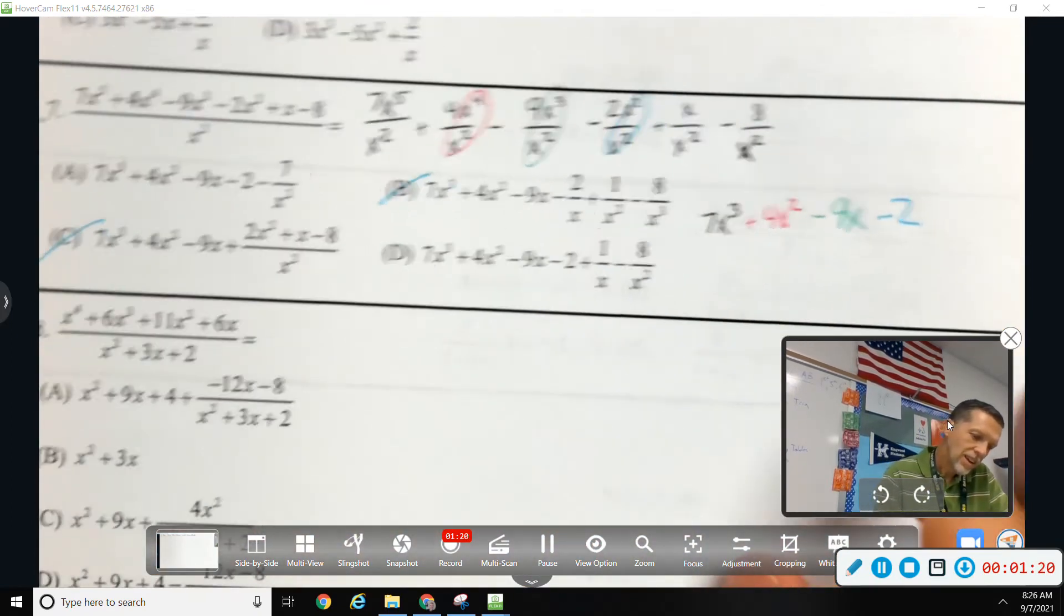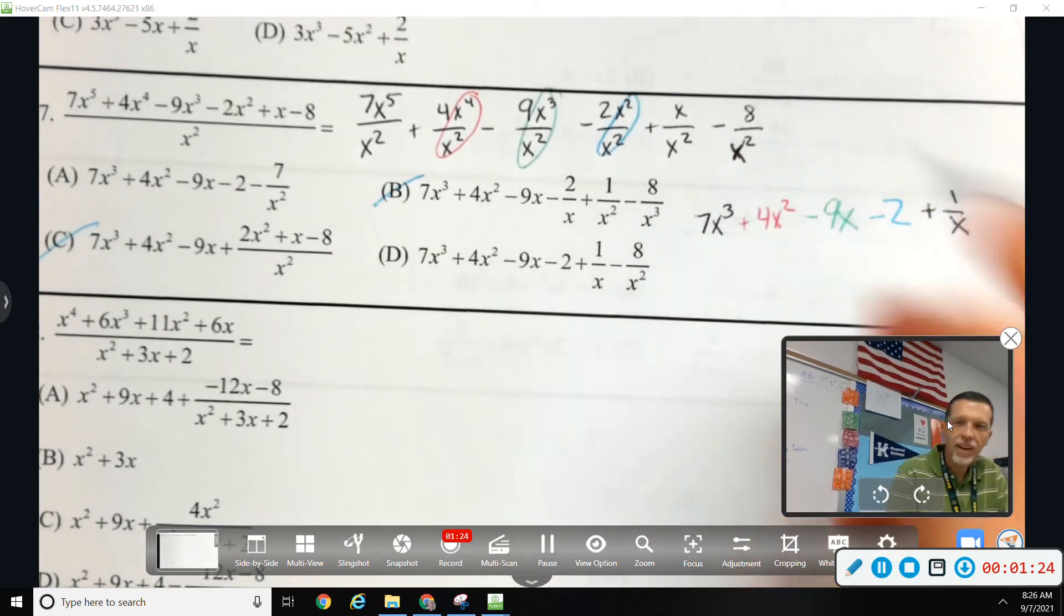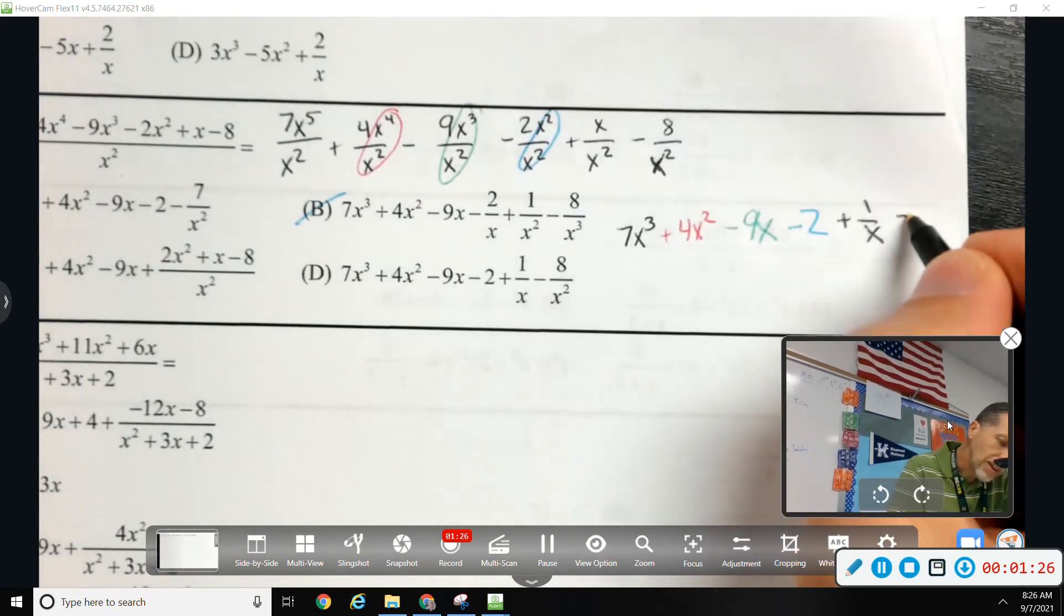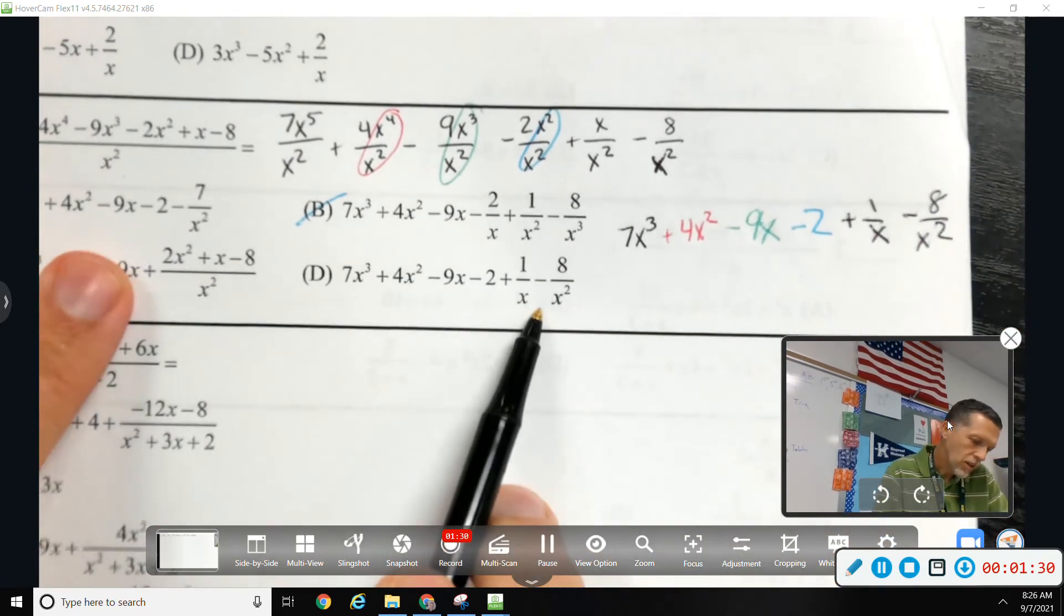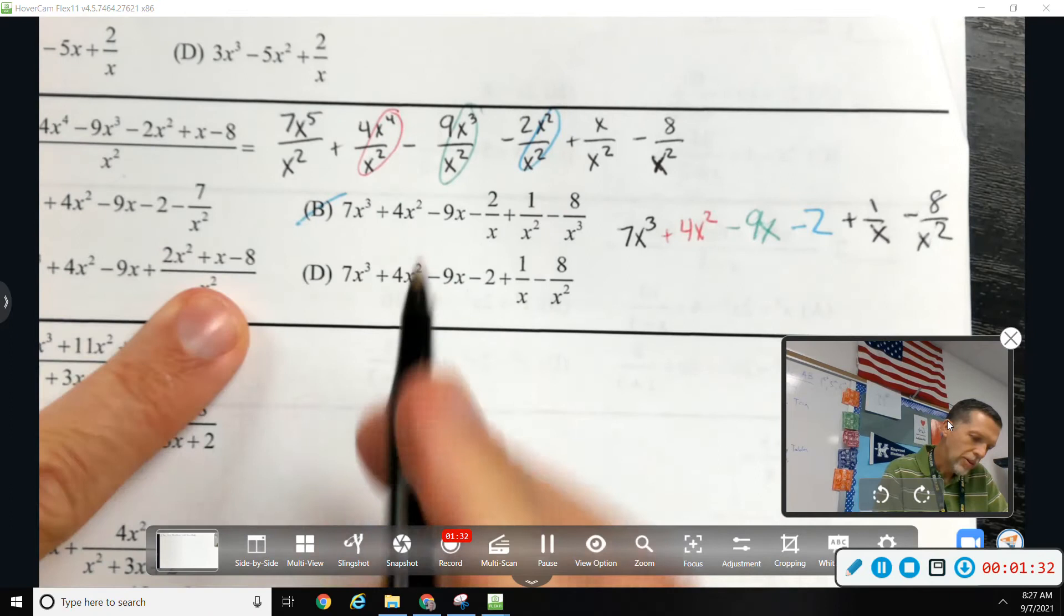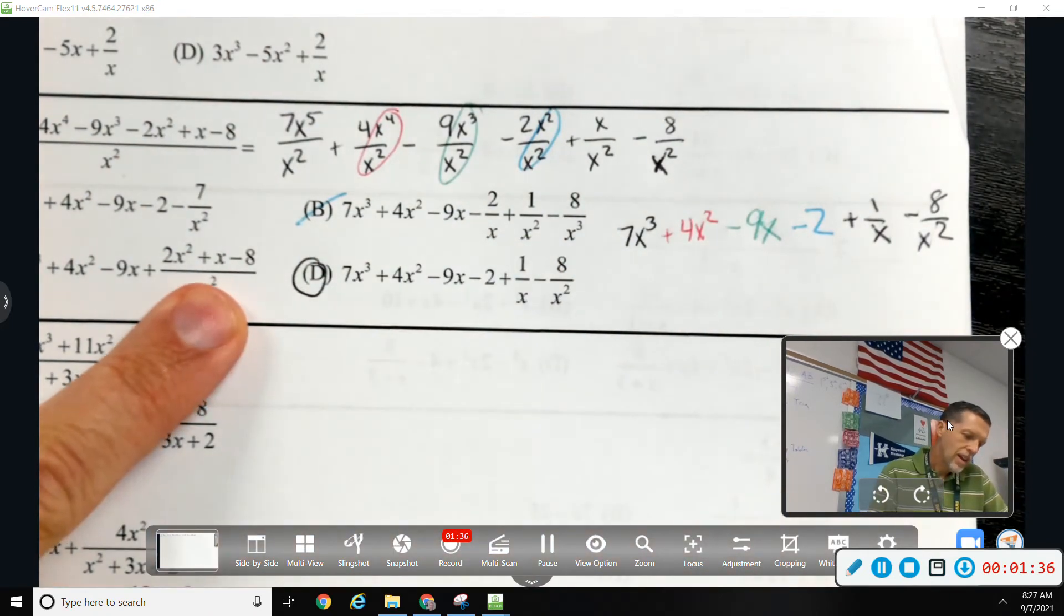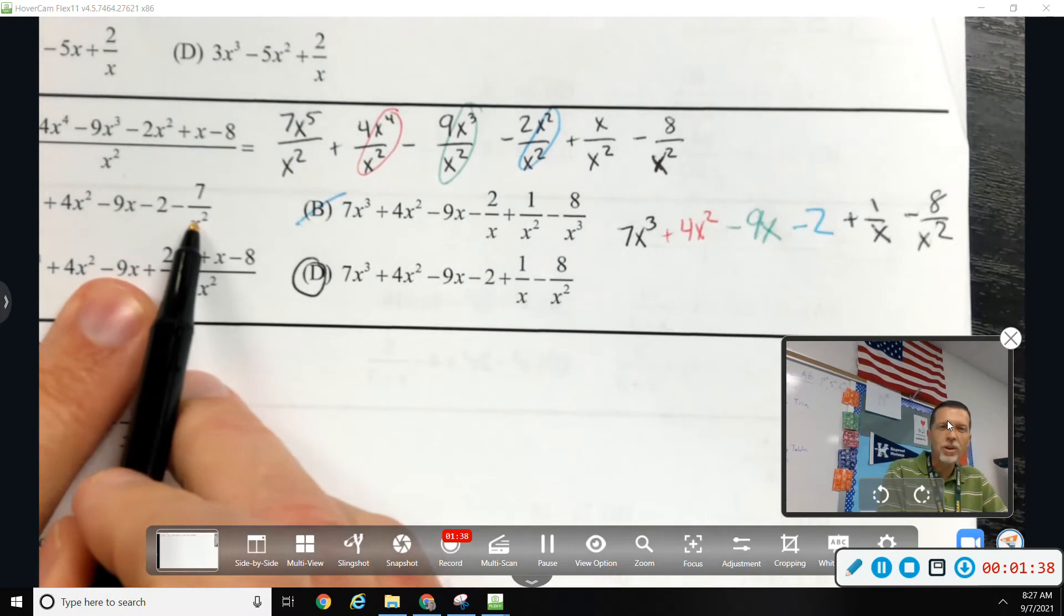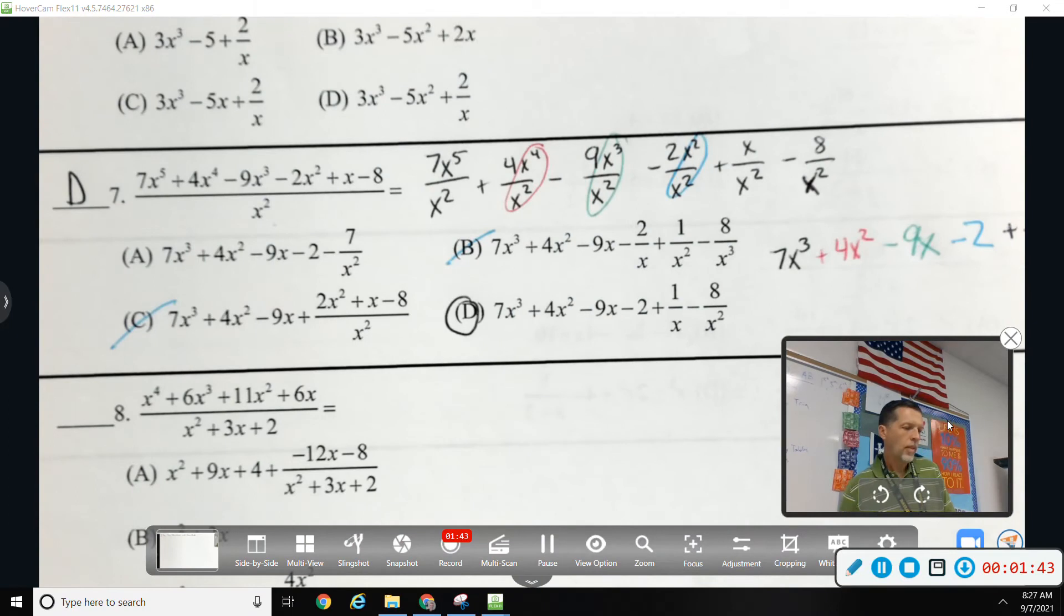And then, x over x squared would be 1 over x. And 8 over x squared, I can't really do anything with. So, that would be d. I guess for a, maybe they did 1 minus 8 and got negative 7. I don't know. Which means that 6 is c. You're right.